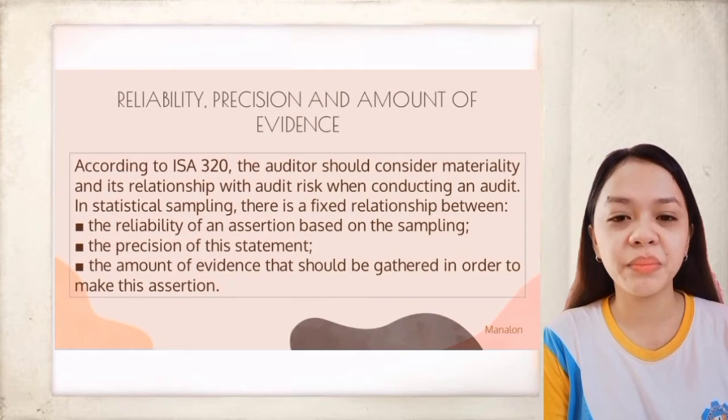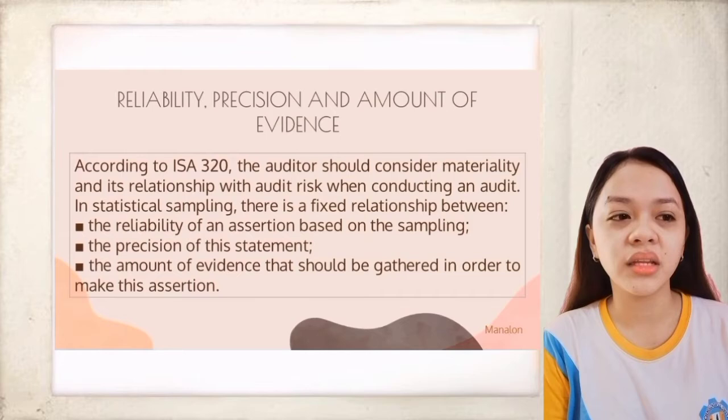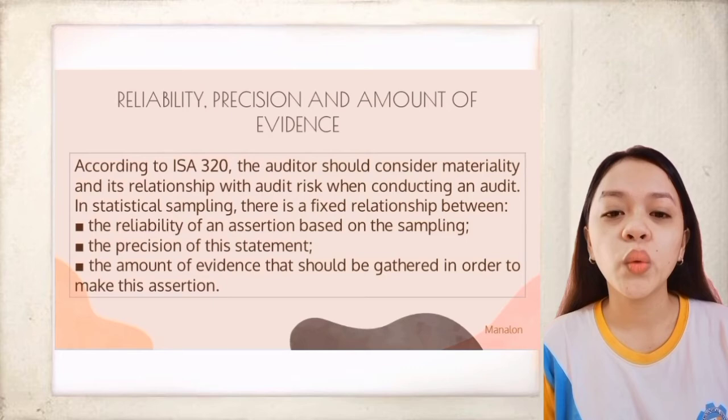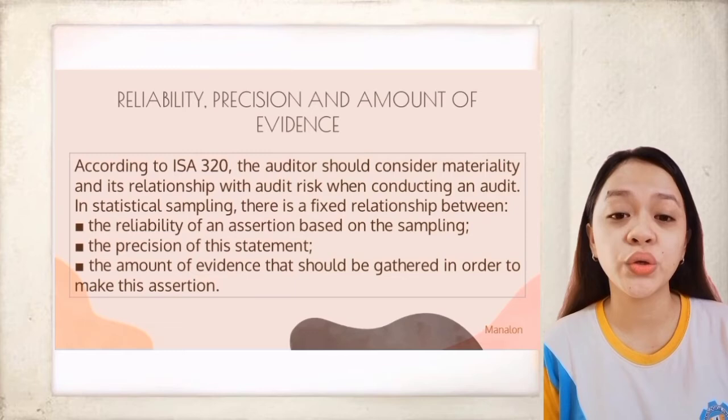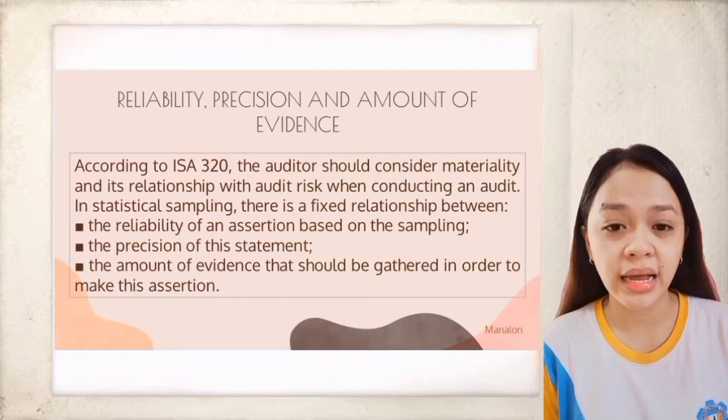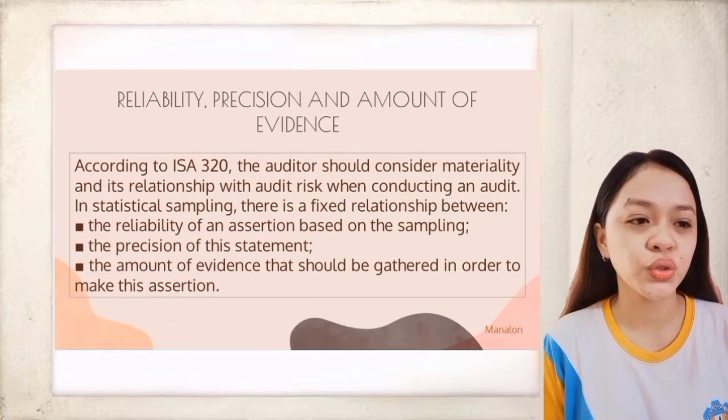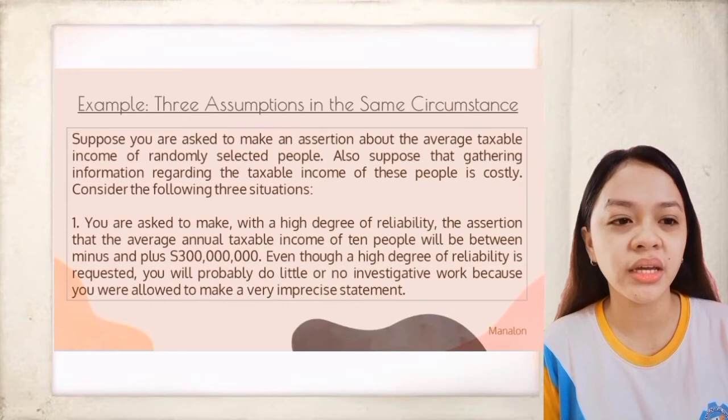The next topic is reliability, precision, and amount of evidence. According to ISA 320, the auditor should consider materiality and its relationship with audit risk when conducting an audit. In statistical sampling, there is a fixed relationship between the reliability of an assertion based on sampling (the level of audit risk), the precision of the statement (the level of materiality), and the amount of evidence that should be gathered to make this assertion.